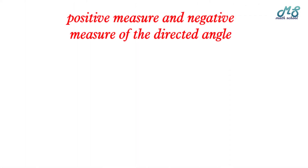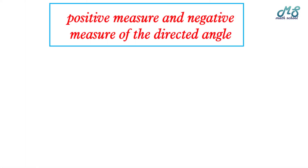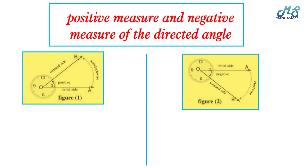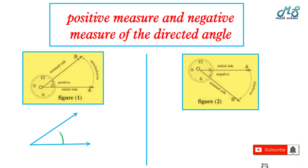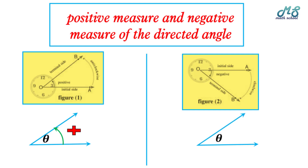Positive measure and negative measure of a directed angle: a directed angle has a positive measure if the direction of the arrow from the initial side to the terminal side is anti-clockwise. But if the arrow from the initial side to the terminal side is clockwise, we have a negative measure.